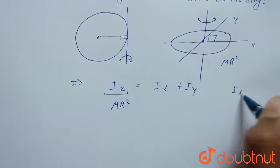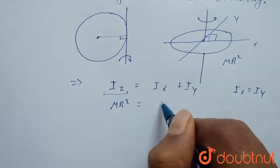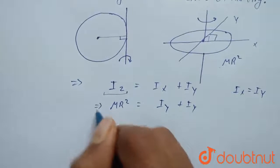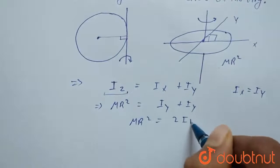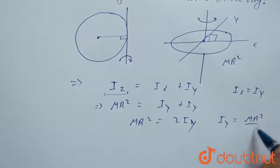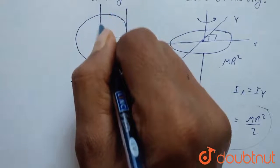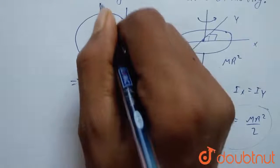I about X equals I about Y, because both are passing through a diameter. So I about Y plus I about Y equals MR², which gives us 2·I about Y = MR², meaning I about Y = MR²/2. Now we have MR²/2 known to us about an axis passing through a diameter.